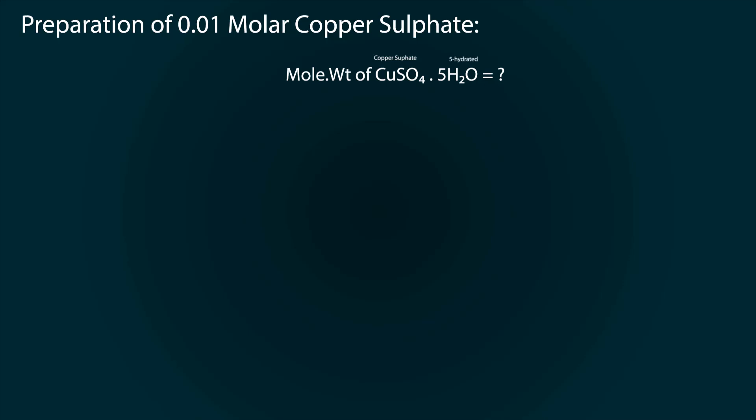Copper sulfate is CuSO4·5H2O. This means we are going to use 5-hydrated copper sulfate chemical. Let's put atomic masses into the formula.